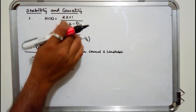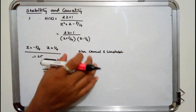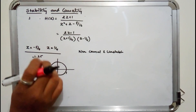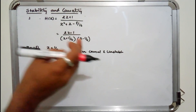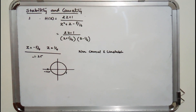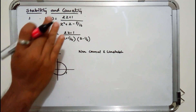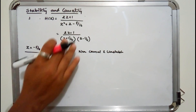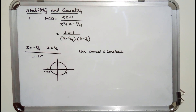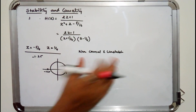Since this was given in the z-domain, it is better to keep everything in the z-domain when finding poles and zeros. Substitute the denominator equal to 0 to get the poles. This system is both non-causal and unstable.